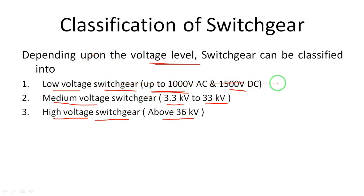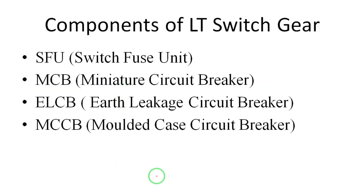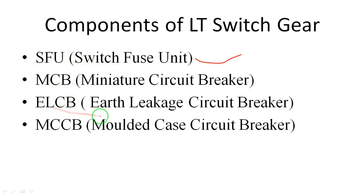In this unit we will discuss broadly about low voltage switchgear — that is, LT switchgear. The four main important components in LT switchgear are: Switch Fuse Unit (SFU), Miniature Circuit Breaker (MCB), Earth Leakage Circuit Breaker (ELCB), and Moulded Case Circuit Breaker (MCCB). These four components are very important in LT switchgear and are also important examination questions.